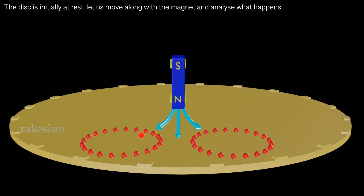Now consider this region of the aluminium disc. The red spheres you see here are the charge carriers; their motion signifies the direction of current. Initially when the magnet was here, there was some magnetic flux through this disc. After the magnet has moved forward, the flux through this area has decreased, and from Lenz's law the direction of the induced current in this region will be clockwise, and for the other region it will be anti-clockwise.